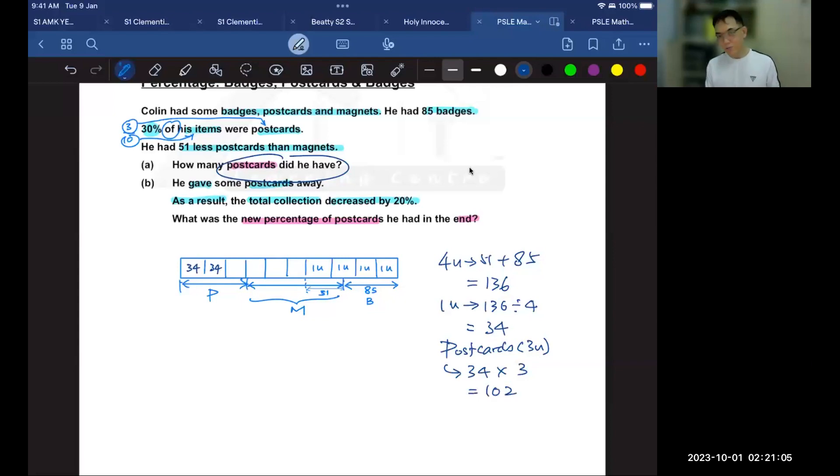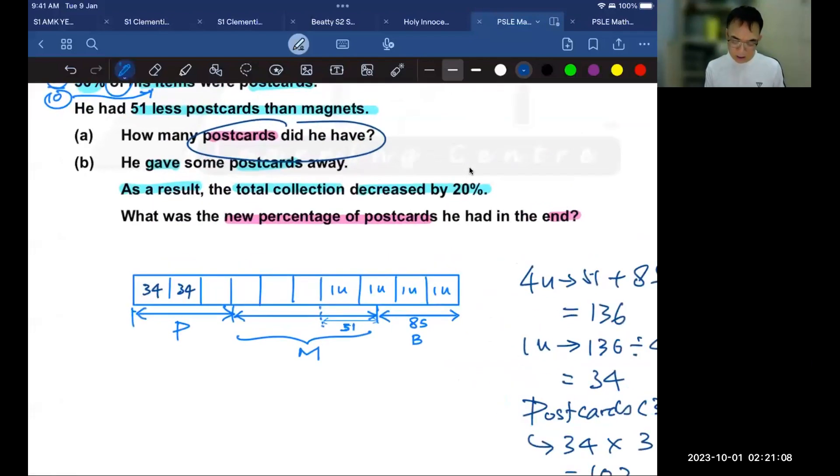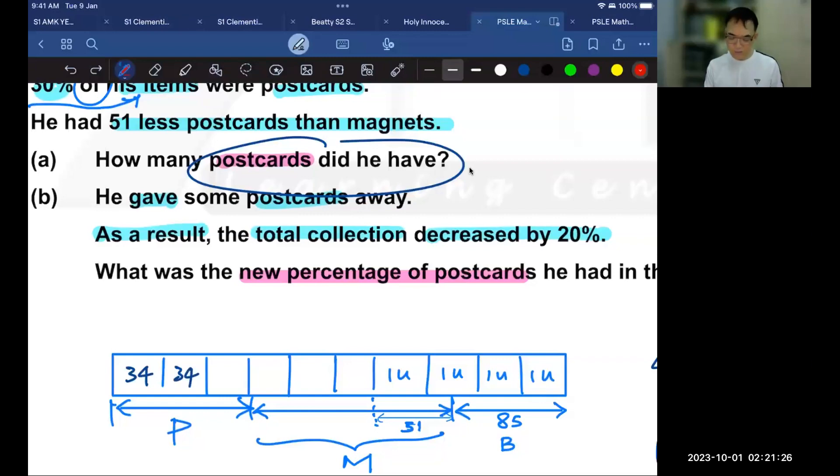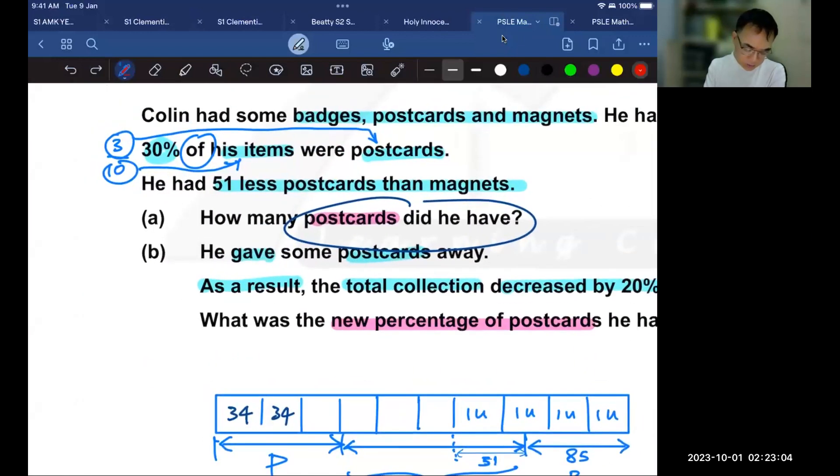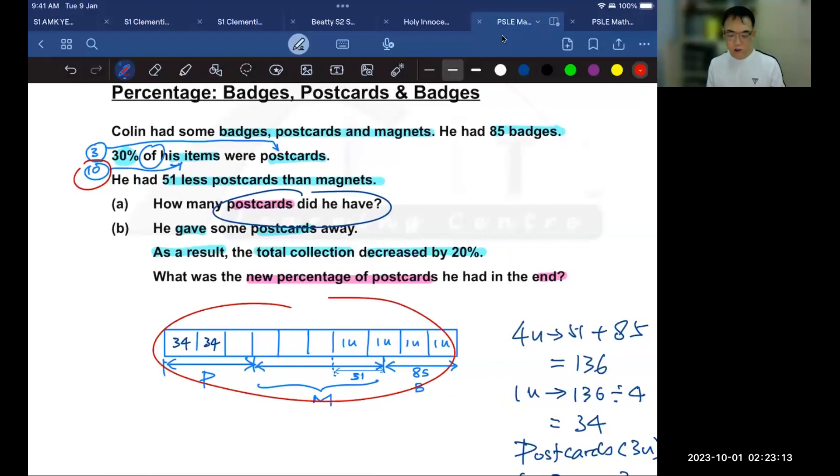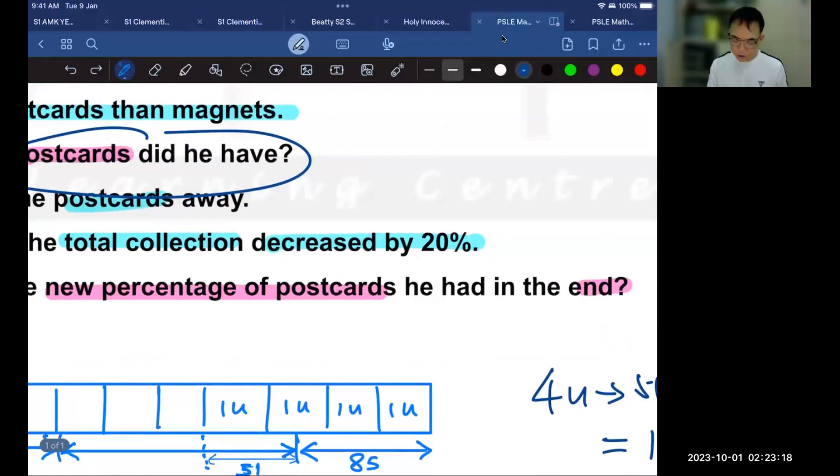All right, let's go on to the second part of the question. It says that he gives away some postcards. And as a result, the total will decrease by 20%. As usual, we are going to change the 20% into a fraction. So 20% is going to be changed into the same denominator as my original fraction, 3 out of 10. And since the original is 10 units, which is what I drew here, I will also change 20% into a denominator of 10. So 20% is 2 out of 10.